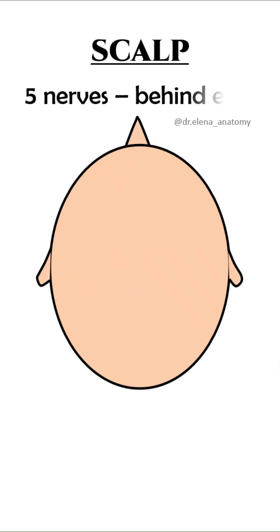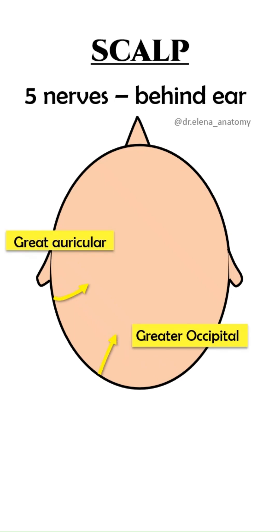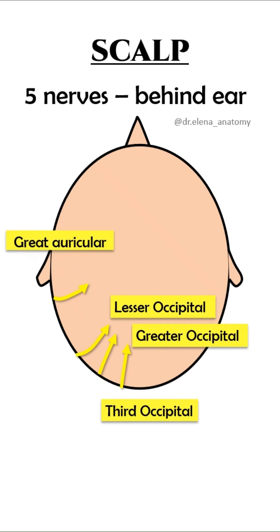It has five nerves behind the ear: greater auricular, greater occipital, lesser occipital, third occipital, and the posterior branch of the facial nerve, which is motor. The rest of the nerves are sensory.